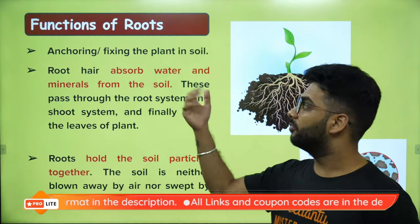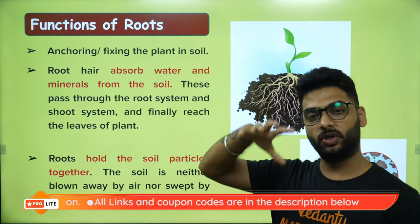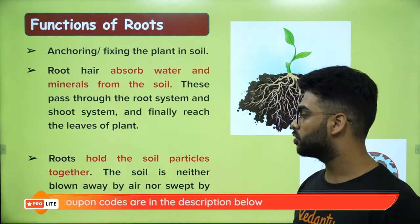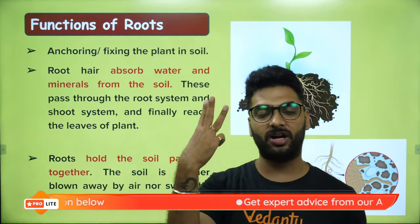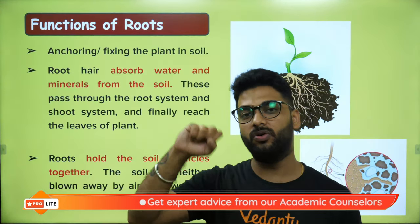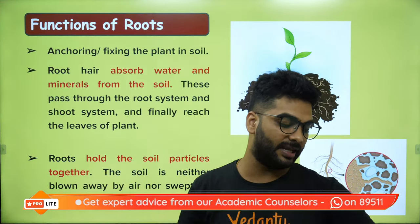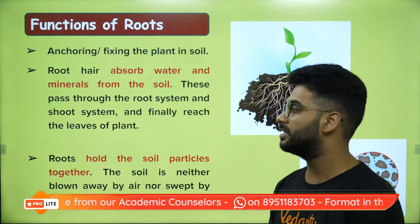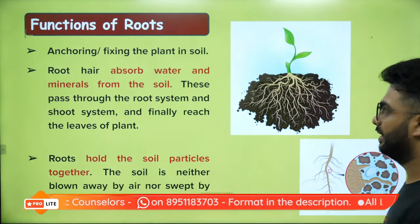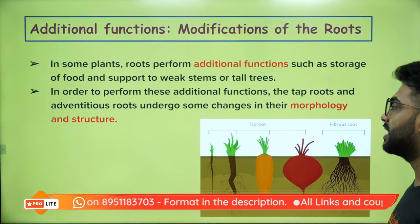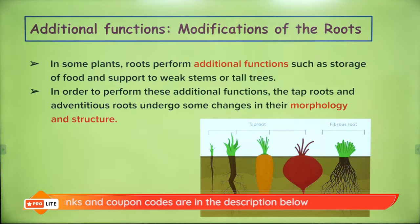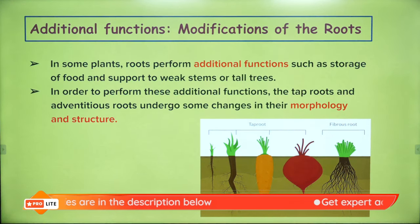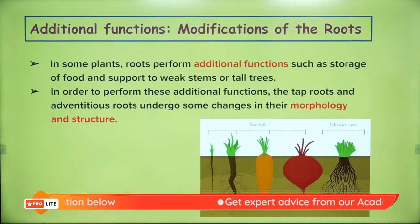The functions of the root are: to hold the plant in place, to absorb water and minerals from the soil, and to hold the soil together to prevent soil erosion. So the root has three main functions. Some roots also store food — like carrot, turnip, and beetroot — which is their additional function.